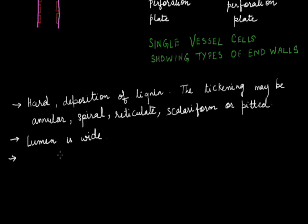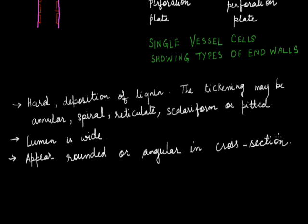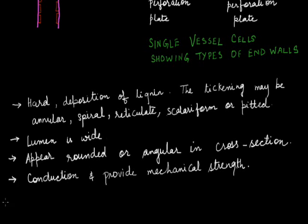As with tracheid elements, the cross section of vessel elements also appears rounded or angular. Xylem vessels are mainly associated with the conduction of water and minerals, and they also provide mechanical strength where these xylem elements are found.